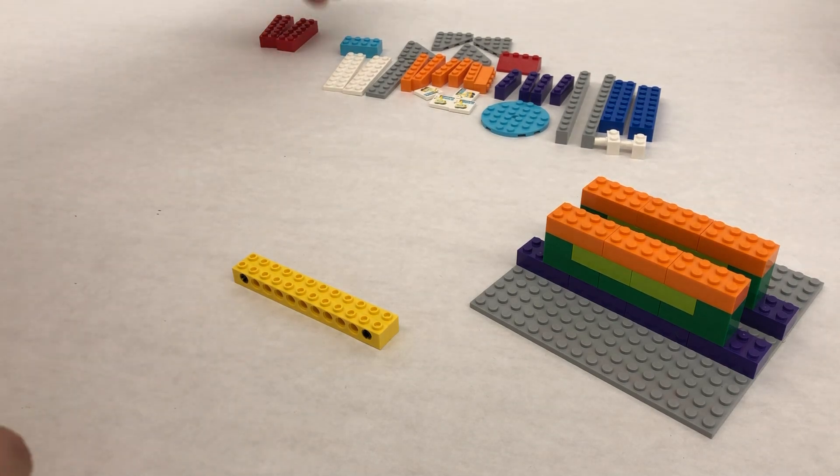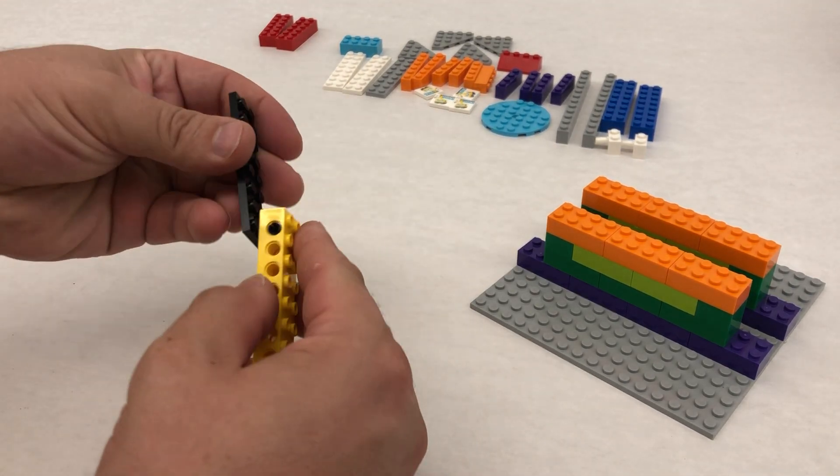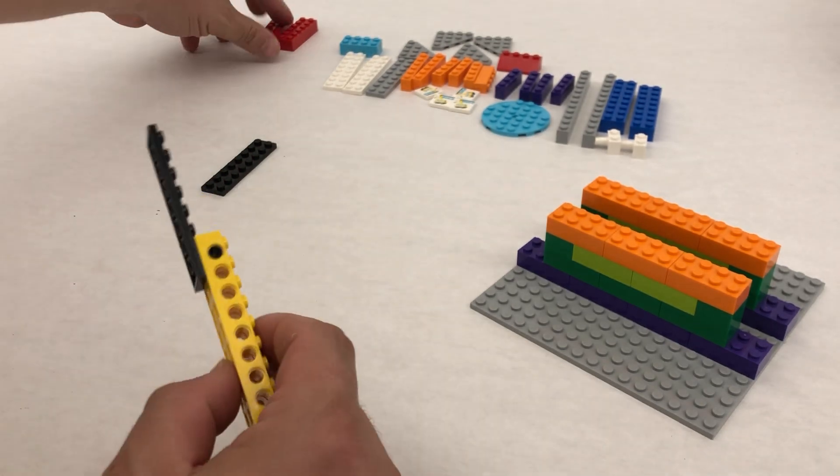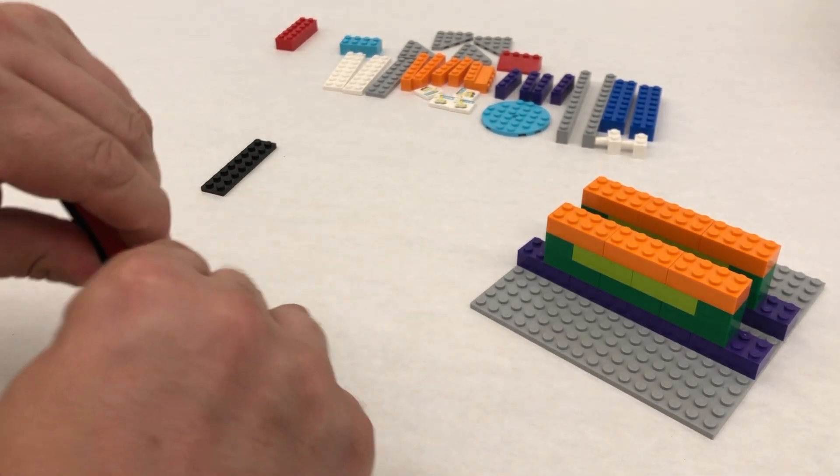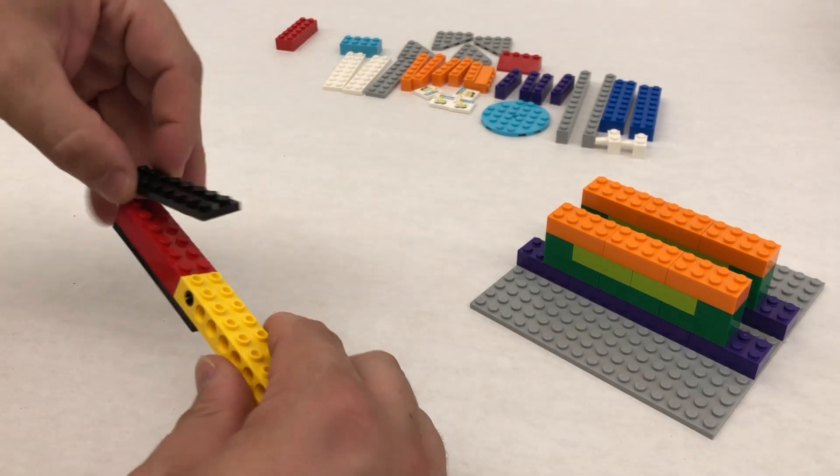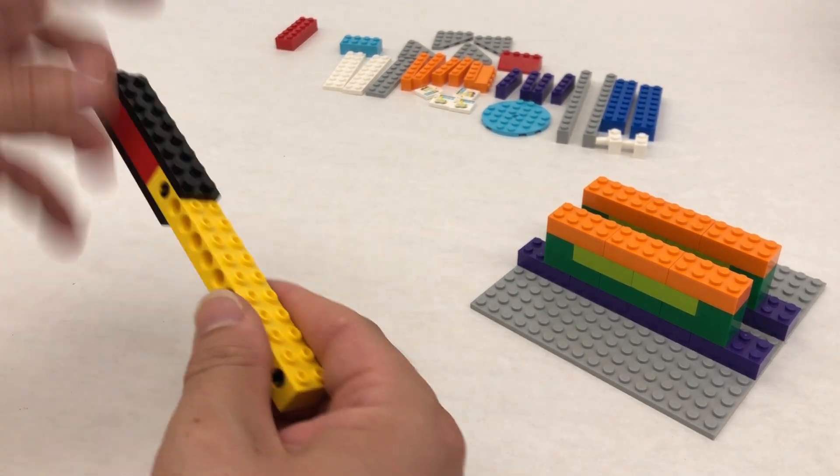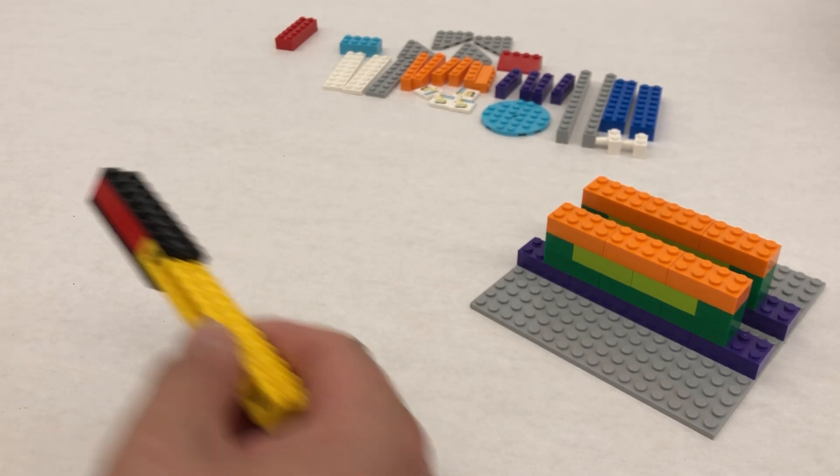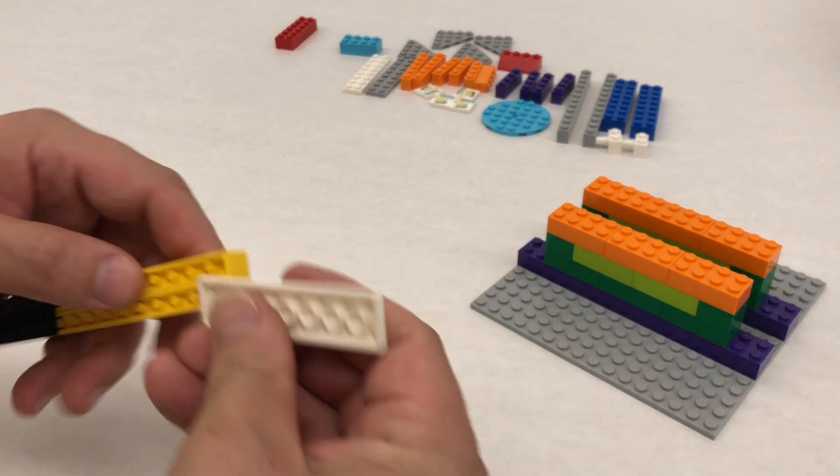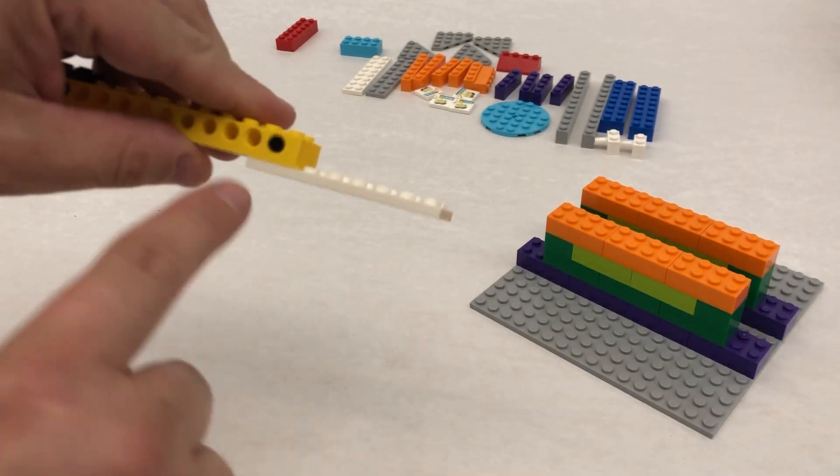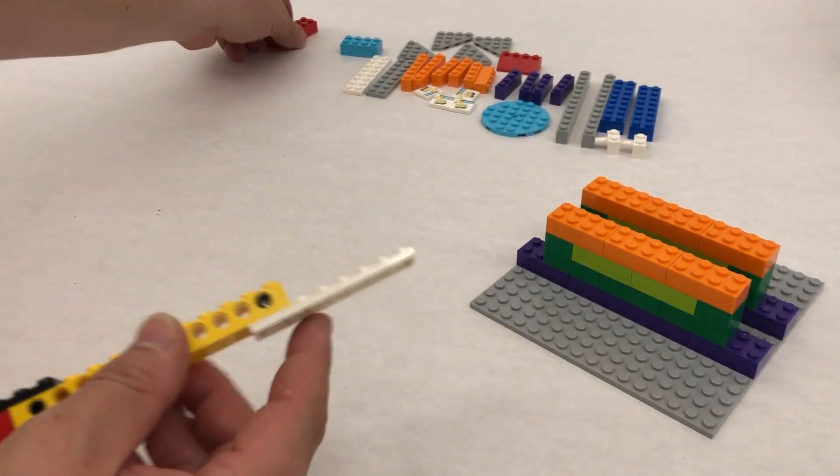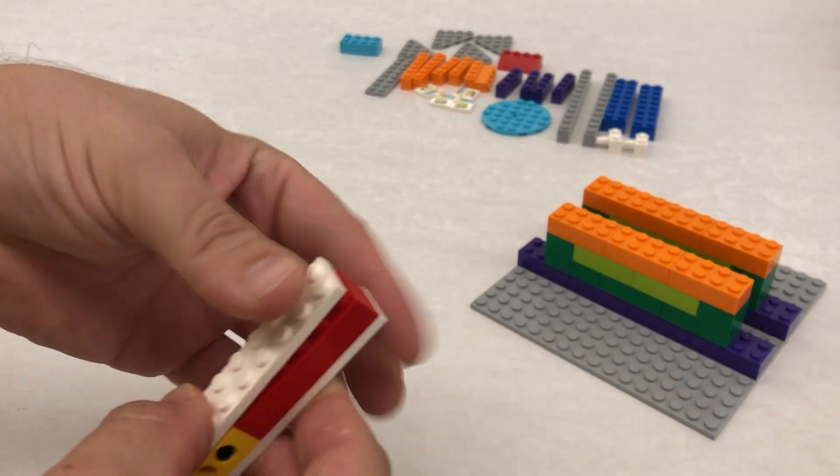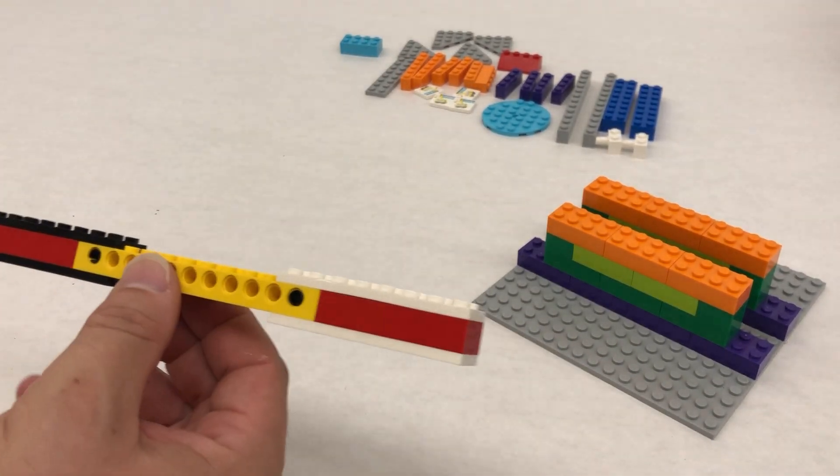Step number nine, we're gonna go underneath. We're just gonna go two underneath and then we're gonna add in our two-by-six brick and then sandwich on top. We're gonna do the same thing on the other side, so we're gonna get two studs underneath, another two-by-six, and then sandwich this one on top.